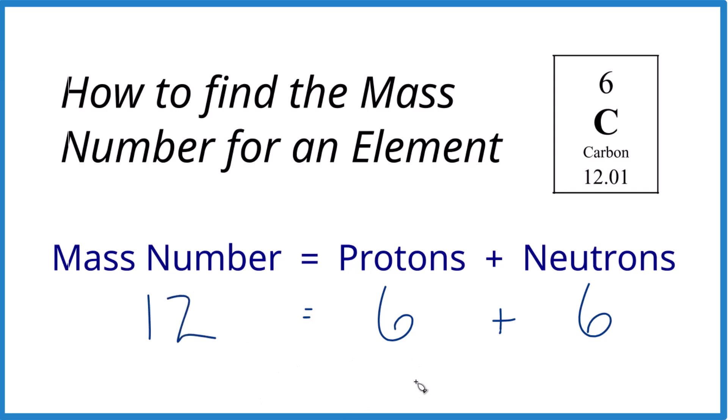So pause, give this one a try. What if you have 6 protons and 8 neutrons? 6 plus 8 equals 14, and that is the mass number. That's really all there is to it.